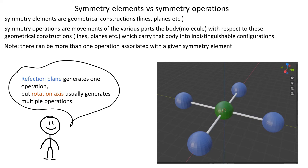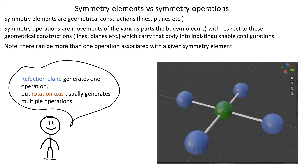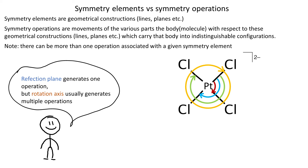At the beginning of the video we said that when we rotate tetrachloroplatinate 2 by 90 degrees, the molecule returns to an equivalent configuration. The axis around which we rotate is a line going through the platinum atom — hence it's a symmetry element. In this particular case it is called a C4 rotation axis. C4 means we are allowed to rotate by 360 degrees divided by 4, that is 90 degree increments. Rotation by 180 degrees and 270 degrees also brings the molecule to an equivalent configuration. Rotation by 360 takes us back to the exact same configuration, but we also count it as a valid solution.